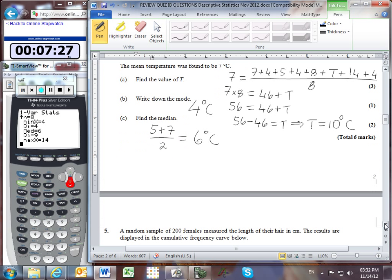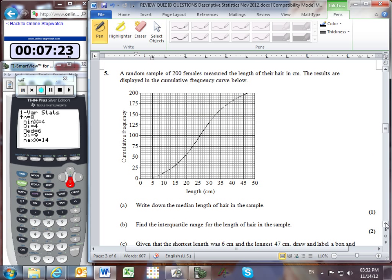Problem 5: a random sample of 200 females measuring hair length shown as a cumulative frequency curve. The median at 100 traces across and down to 26 centimeters. For the interquartile range, the upper quartile at 150 traces to 33, and the lower quartile at 50 traces to 19. So 33 minus 19 gives 14 centimeters interquartile range.